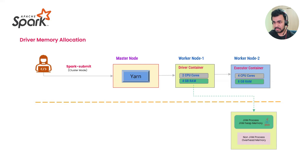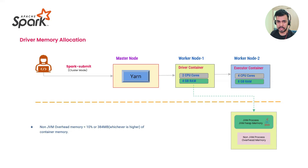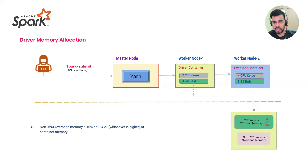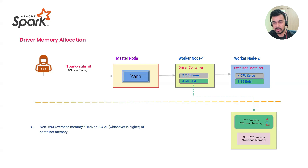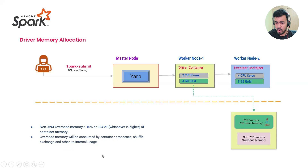The non-JVM overhead memory is used by non-JVM processes. As per the documentation, overhead memory is 10% of the actual container memory, or 384MB, whichever is higher. For example, if you give 2GB, 10% is 200MB — which is less than 384MB, so it takes the minimum of 384MB. If you assign 4GB, then 10% is 400MB, so overhead memory will be 400MB.